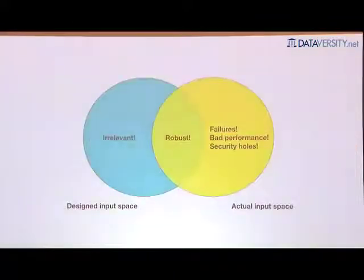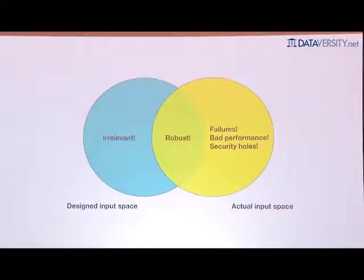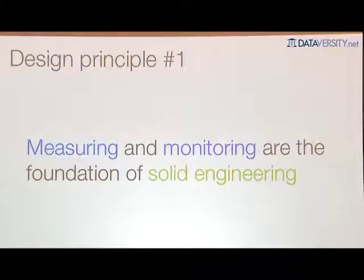In order to design better software, you have to consider all the possible impacts of your code being wrong. Bad things happen whenever your software sees an input outside its designed input space — things like failures, bad performance, or security holes. In fact, the entire computer security industry exists because of the mismatch between actual and designed input spaces. There are a number of design principles that emerge when you embrace that your code is wrong. The first is that measuring and monitoring are the foundation of solid engineering — you cannot possibly improve your software without understanding the conditions in which it works and in which it doesn't.